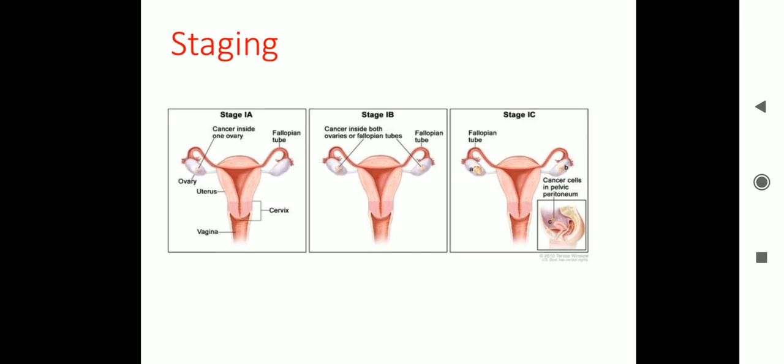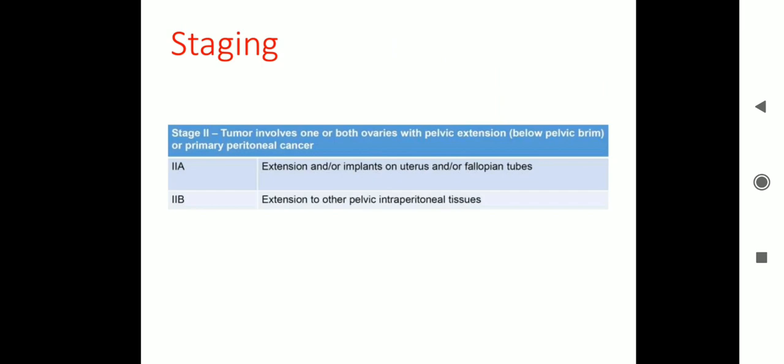In stage 1A, only one ovary is involved. In 1B, both ovaries are involved. In 1C, both ovaries with surgical spill and other staging criteria. Stage 2: tumour involves one or both ovaries with pelvic extension below the pelvic brim, or primary peritoneal cancer. Stage 2A is extension or implants to the uterus or fallopian tubes. Stage 2B is extension to other pelvic intraperitoneal tissues.